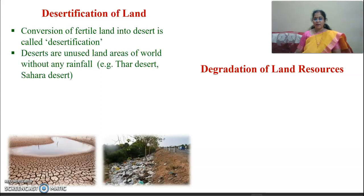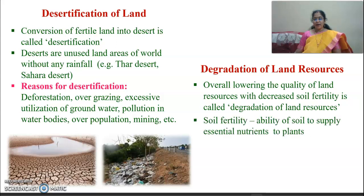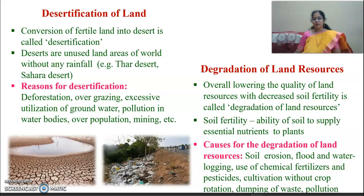What is desertification? Conversion of fertile land into desert is called desertification. Deserts are unused land areas of the world without any rainfall — for example, the Thar Desert and Sahara Desert. The reasons for desertification are deforestation, overgrazing, excessive utilization of groundwater, pollution in water bodies, overpopulation, and mining. The degradation of land resources refers to the overall lowering of the quality of land resources with decreased soil fertility.